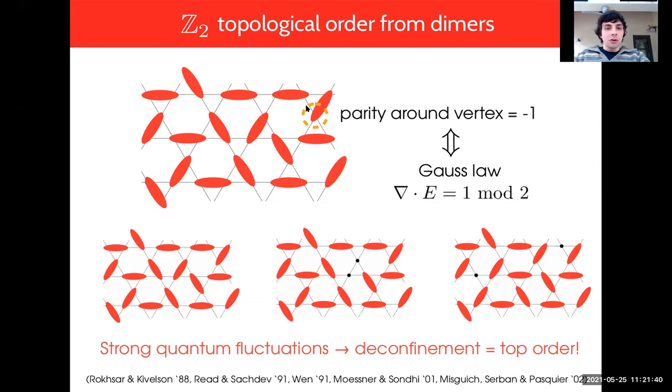What we understand about these dimer models is that they're a very natural encoding of a Z2 gauge theory. A dimer state has the property that every vertex of the lattice is touched by exactly one dimer, which means that if you measure the parity of dimers around any vertex you get minus one, which you can interpret as a sort of Gauss law.